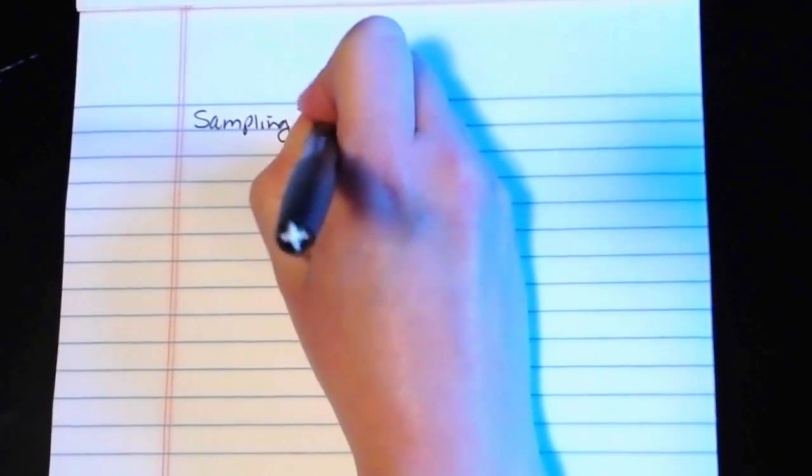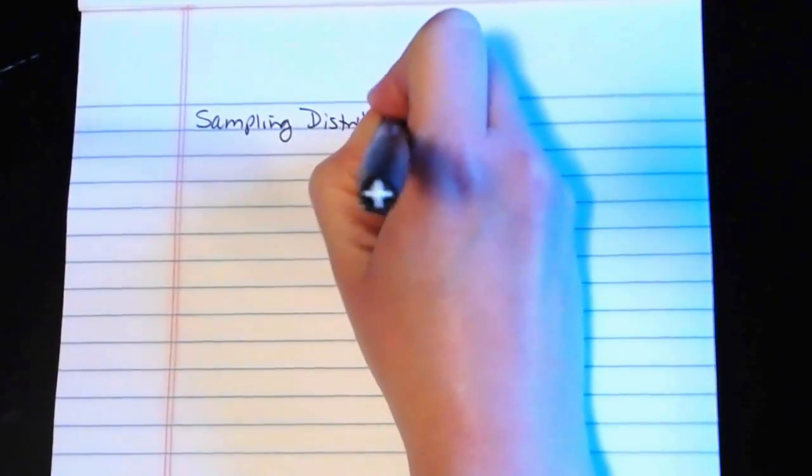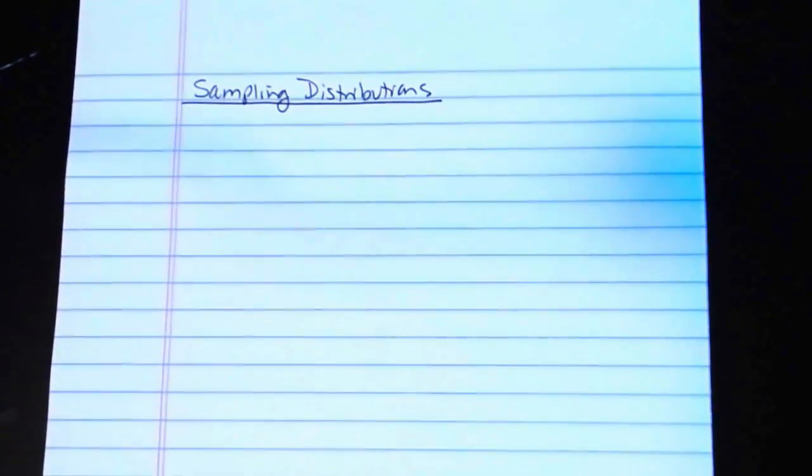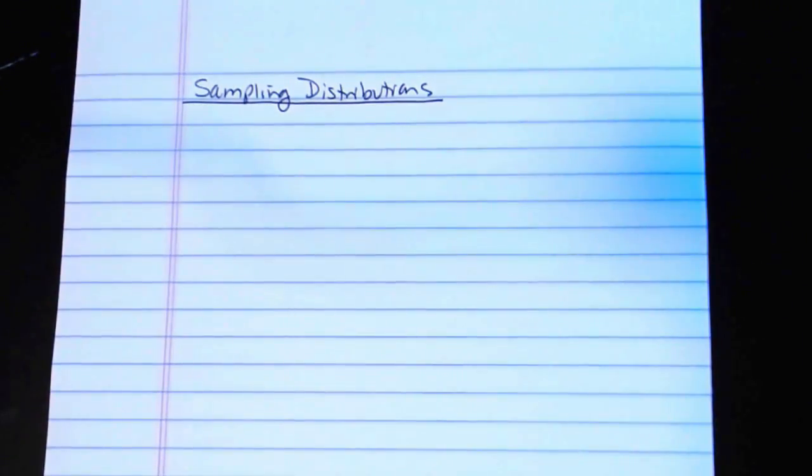So before we get to the actual concept of sampling distributions themselves, there are some terms and definitions and symbols that we're going to need to review. Some of them are things that we've already talked about and then there are others that we're going to need to introduce because they will be new concepts.